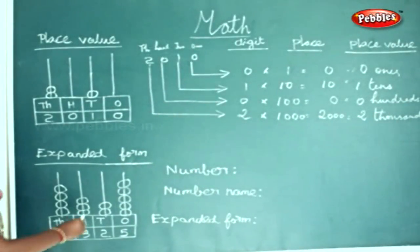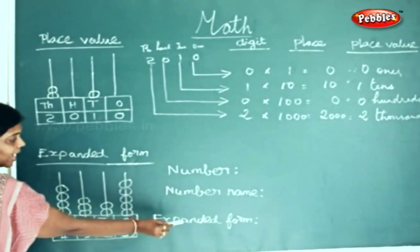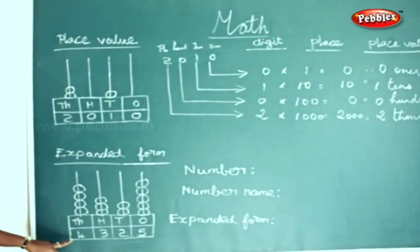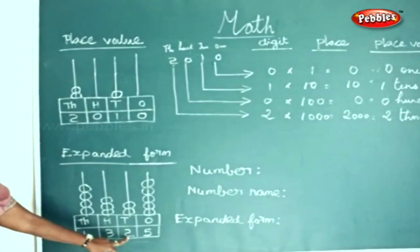Now we will see the number, number name, and expanded form for the given abacus sum here. The number is 4325.